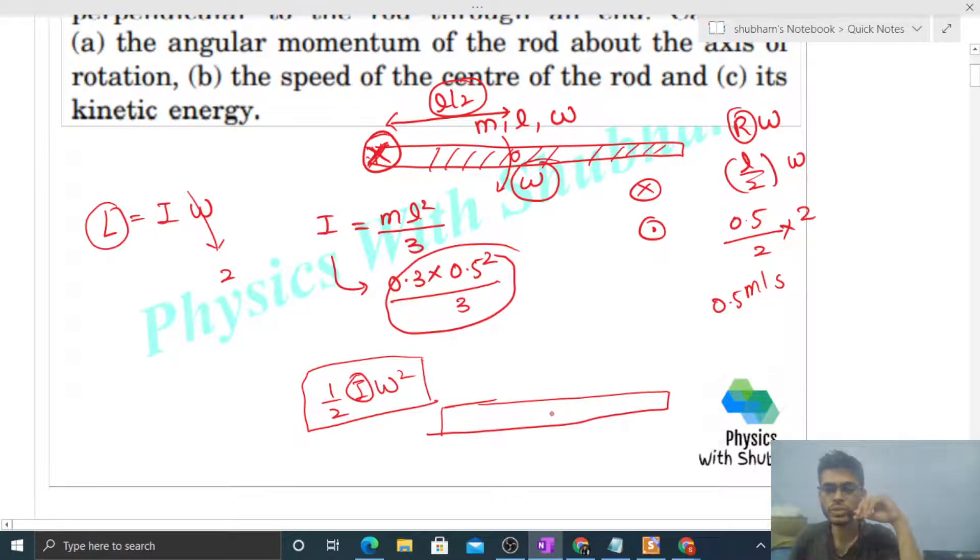The center moves with 0.5 meters per second, and this rod rotates about the center with omega, that is 2 radians per second. Omega is the property of the rod. You can take any axis, because omega is the property of the rod, not any axis.